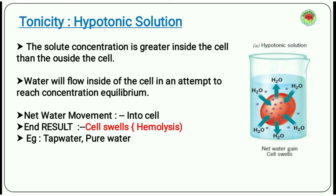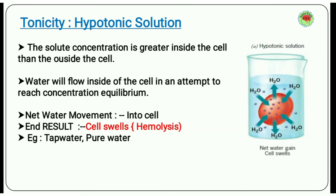There are three types. First: hypotonic solution. In a hypotonic solution, the solute concentration is greater inside the cell. As you can see in the beaker, a cell is placed and the concentration inside the cell is higher. Because of that, the water outside will start to move inward to maintain equilibrium, since solute cannot cross the membrane. The cell will swell up, and this process is called hemolysis — when a cell absorbs water and increases in size.